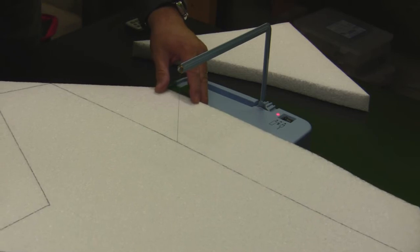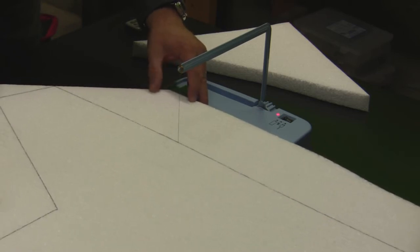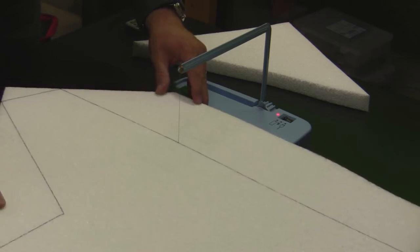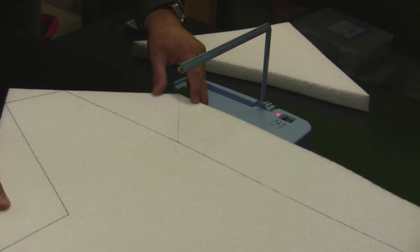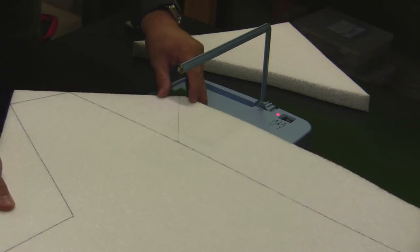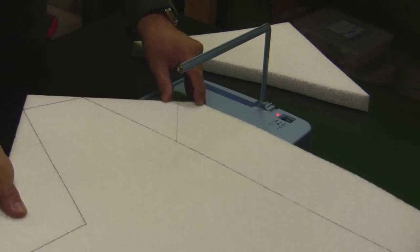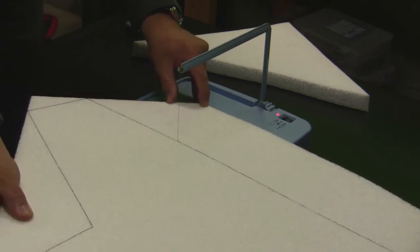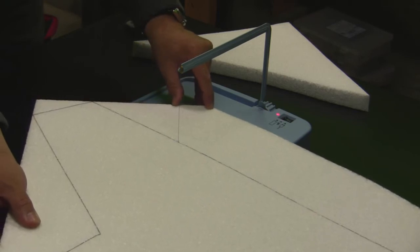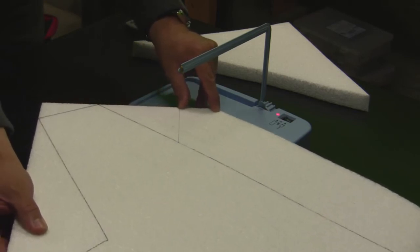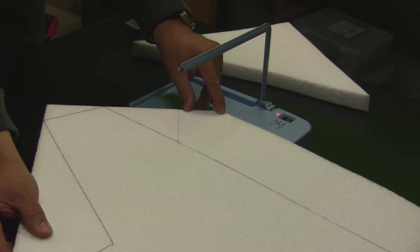It's definitely a lot easier to cut the thicker foam like this just with the hot wire than to try and cut through it with a knife or a box cutter. And you want to try and keep your hands as steady as you can as you cut through it.